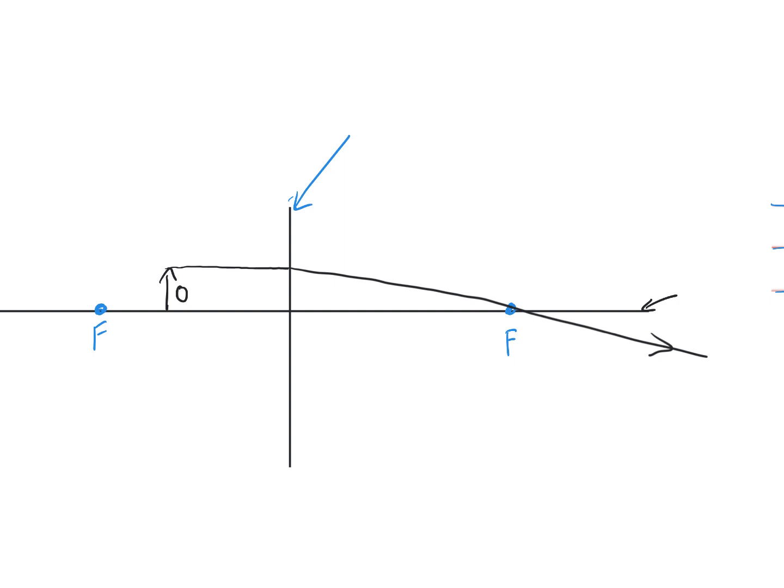The second one you always do for the lens is straight through the middle. And again, you'd use a ruler for this. It goes straight through the middle and doesn't refract or bend. It just keeps going straight. Remember your arrow as well.